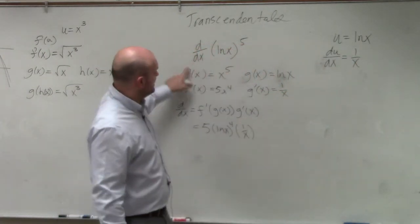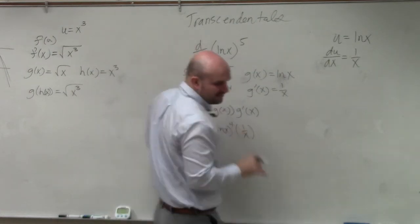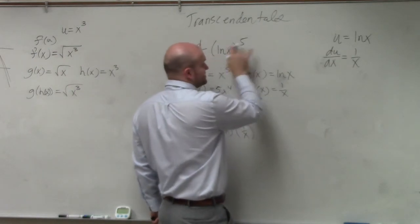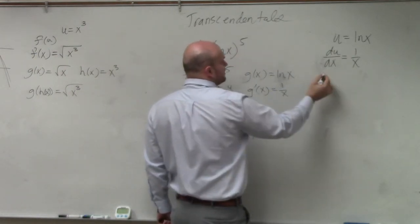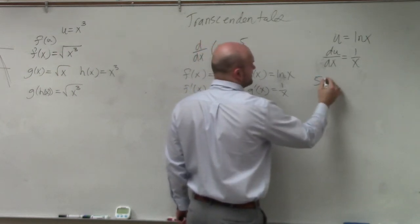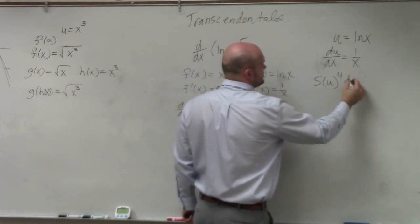Following the same kind of formula, we need to take the derivative of our outside function, which is x to the fifth. So therefore, it'd be 5 times u to the fourth times du/dx.